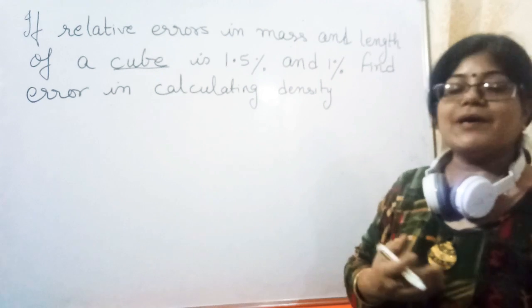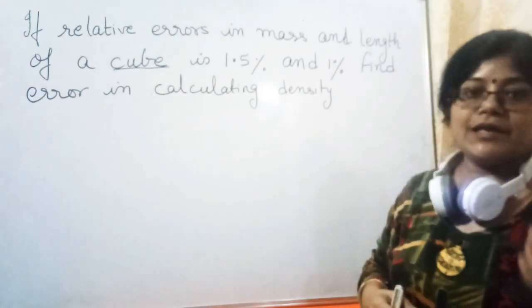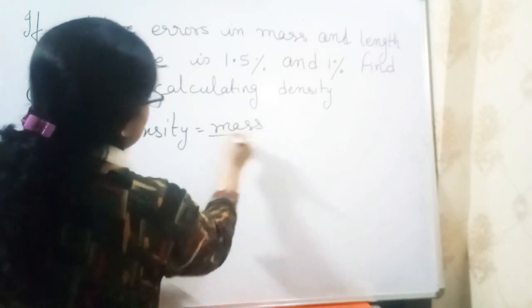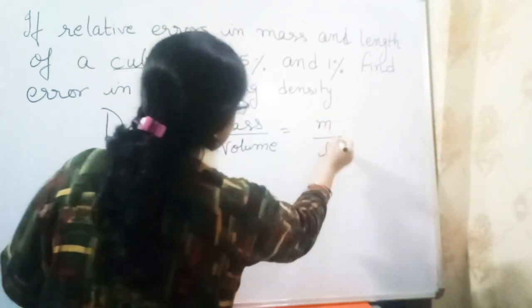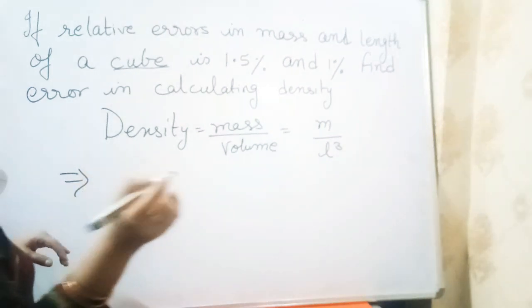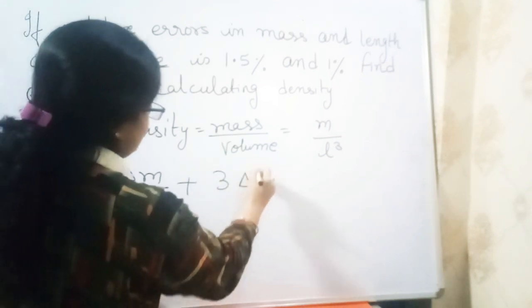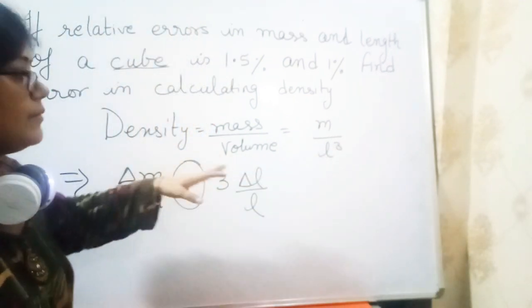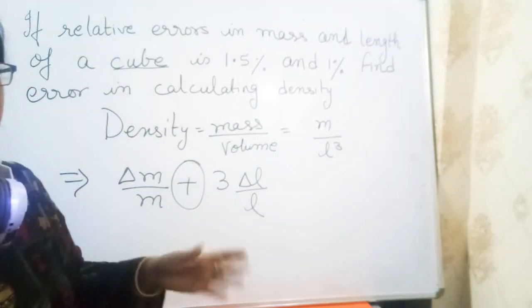What is the formula of density? Mass per unit volume. For a cube, volume equals L cubed, so density equals m over L cubed. The error formula is delta rho over rho equals delta m over m plus 3 delta L over L. I write plus, not minus, because in errors nothing should be subtracted - everything must be added. Errors are always added.